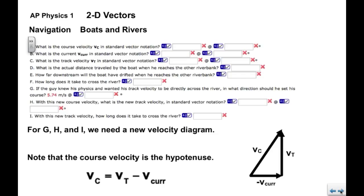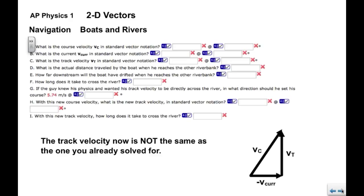So again, we need to use a little trigonometry. Knowing the course velocity and the current velocity, we can find the track and we can also find the angle. Note that this track velocity is not the same as the one that you solved for in letter C.